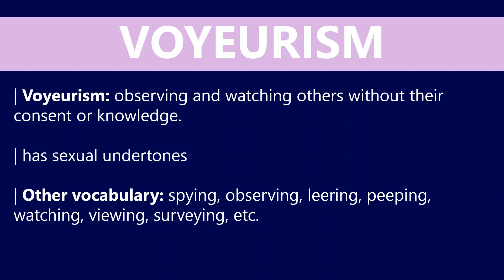In terms of other vocabulary, you can look at verbs like spying, observing, leering and peeping, which have negative connotations, as well as verbs like watching, viewing, surveying, and nouns like surveillance. You can even look at scopophilia, which has sexual connotations — all vocab you can use alongside voyeurism to really explore this particular theme.